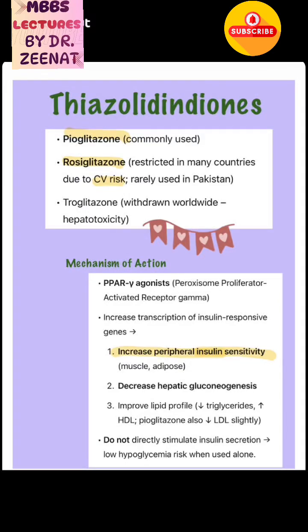Anti-diabetic drugs — thiazolidinediones — include pioglitazone, rosiglitazone, and troglitazone. Pioglitazone is commonly used. Rosiglitazone is restricted in many countries due to cardiovascular risk, including Pakistan. Troglitazone has been withdrawn worldwide because it causes hepatotoxicity.